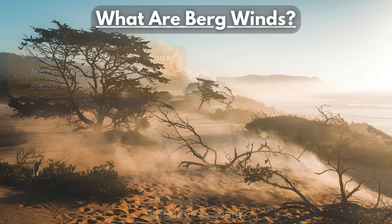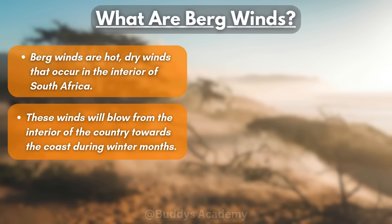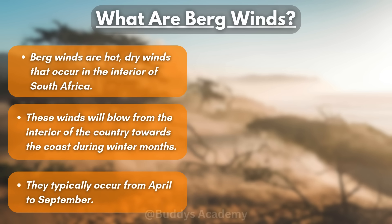So what are Bergwinds? Bergwinds are hot, dry winds that occur in the interior of South Africa. Remember those two key words: hot and dry, because essentially that's what a Bergwind is. These winds will blow from the interior of the country towards the coast during winter months, and they typically occur from April to September.